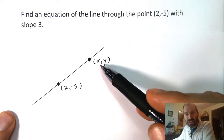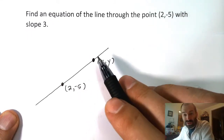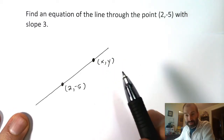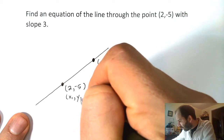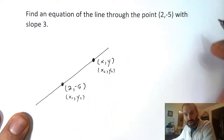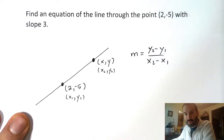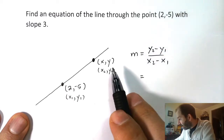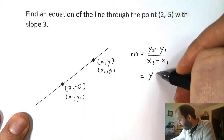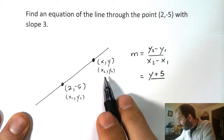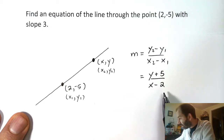So how can we come up with an equation from this picture? Well, if you remember from the last video, when we have two points on a line, we can compute the slope. So I'll just compute the slope here. I'm going to call this my (x1, y1), and I'm going to call this my (x2, y2). And I'm going to use the equation for slope: y2 minus y1 over x2 minus x1.